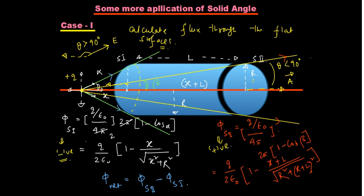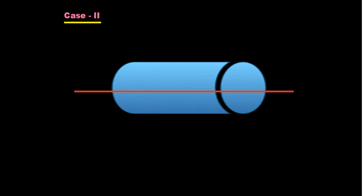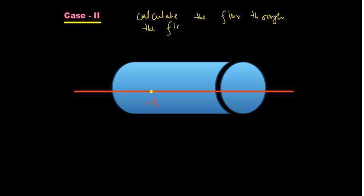Now the question arises: what if the charge is residing inside the cylinder? We will do that too. Let us consider the charge is placed asymmetrically inside — not exactly at the middle of the axis — and we take this charge to be plus Q. Again, we calculate the flux through the flat faces.